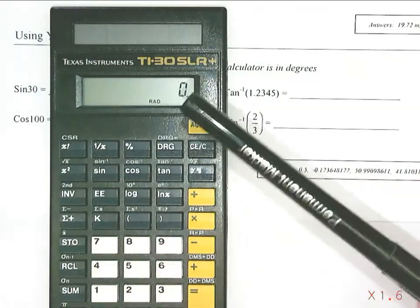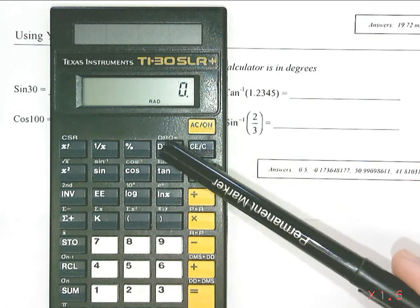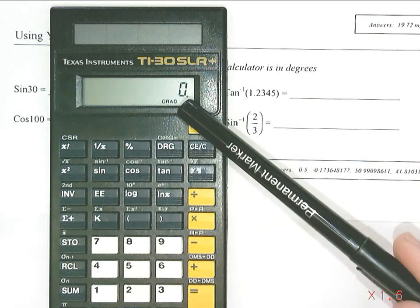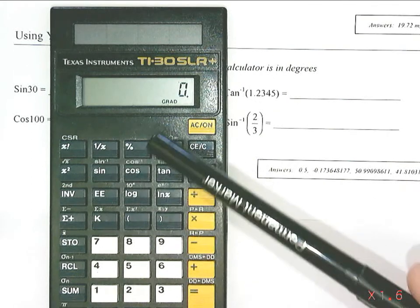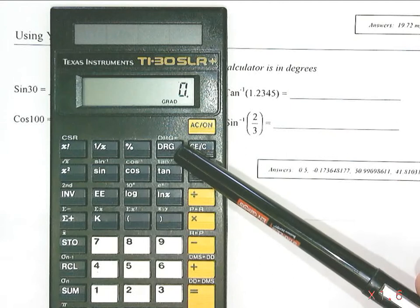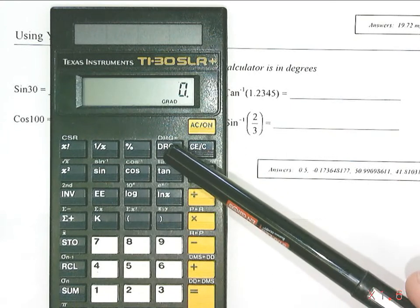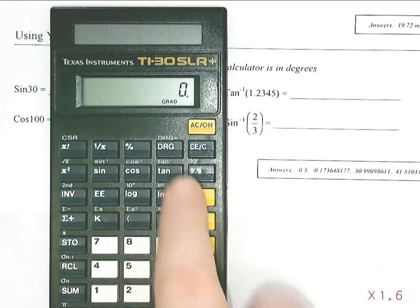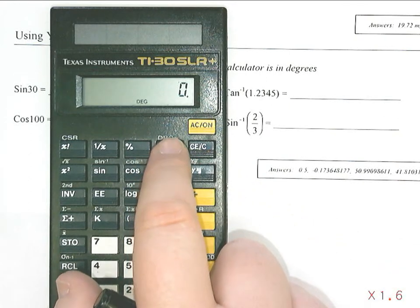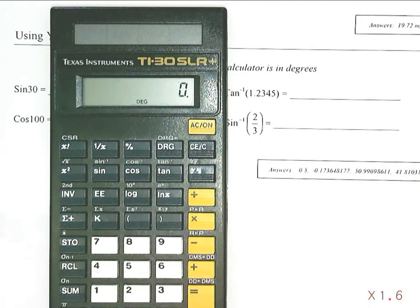If a calculator is not in degrees, it may say rad or R or it may say grad or the letter G. To switch between modes is different on different calculators. On this calculator, I would use the D-R-G button, which stands for degrees, radians, gradients. And if you press the D-R-G button, it will cycle between degrees, radians, and gradients.